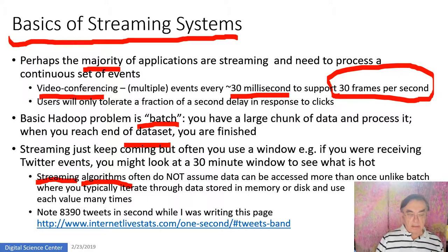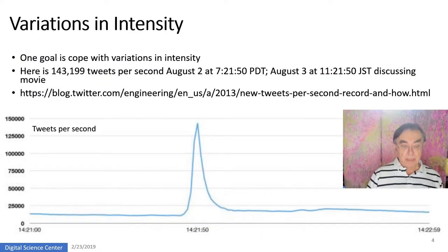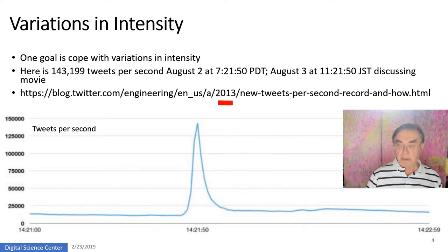When I was writing this PowerPoint, there were 8,390 tweets appearing in the second I was on that page — that gives you a sense of the scale. Twitter has to process over 8,000 tweets a second, and it can get worse. In 2013, almost 144,000 tweets occurred in one second discussing a movie, and this is the record for tweets per second.